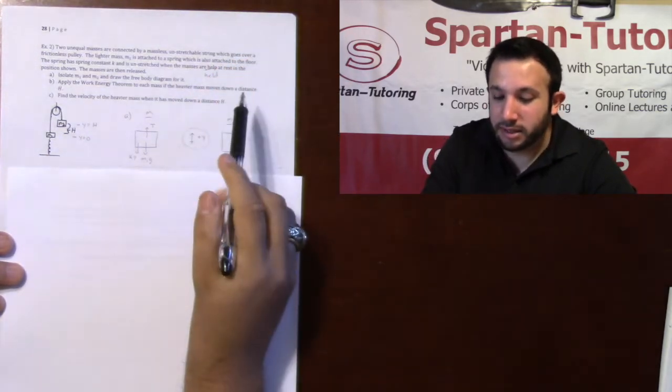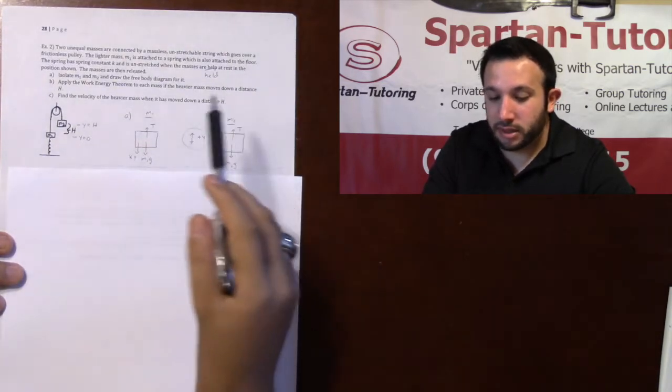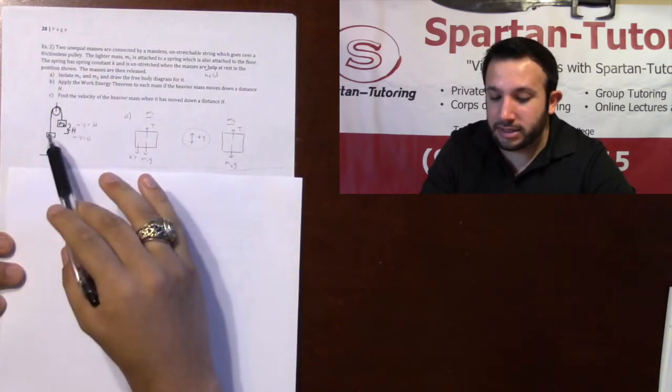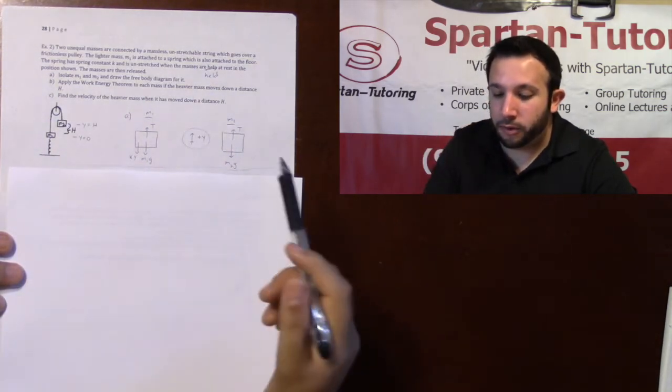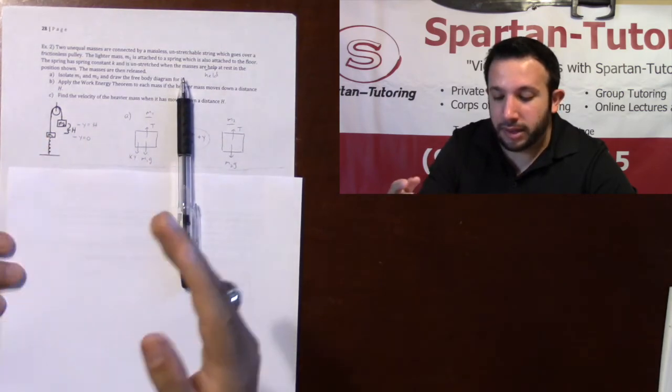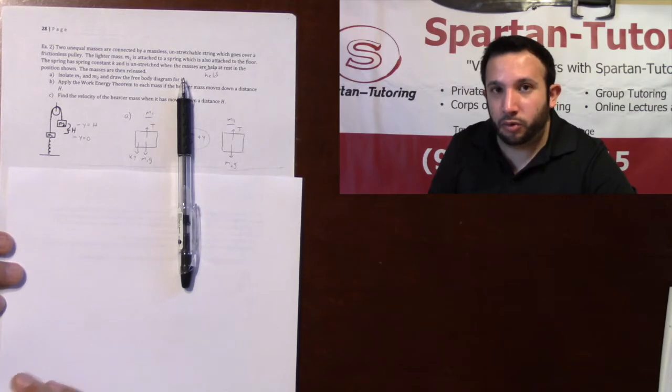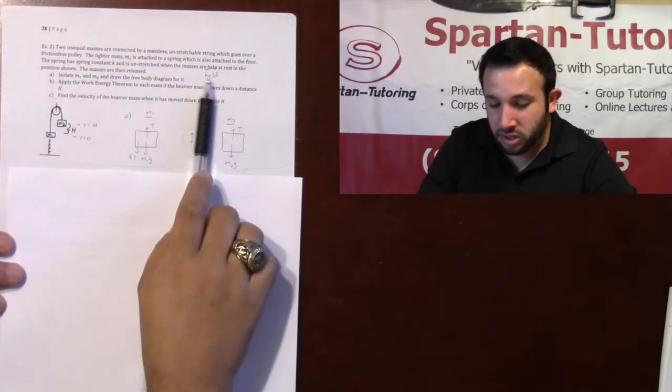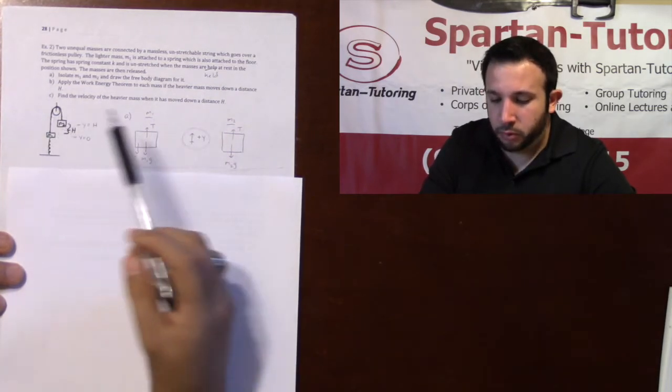In part a, isolate m1 and m2 and draw the free body diagram for it. Let's take a look at m1—that's going to be this block right here. As always, first gravity mg is straight down. You have no normal force, you have no friction because you have no surface.